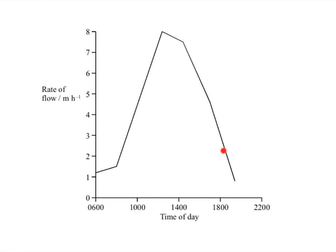Then the rapid decrease in the evening: as the day carries on, light intensity decreases and temperature decreases. Both of those factors reduce the rate of transpiration, reducing the tension, so the rate of flow decreases.